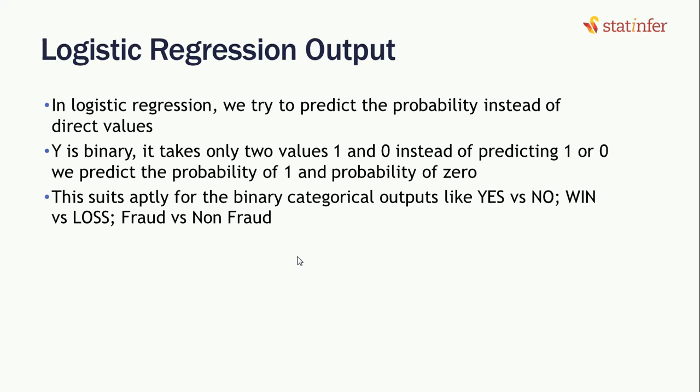Why is binary? It takes only two values, 0 and 1. So instead of predicting directly 0 and 1, if we try to predict probability of 1 or probability of 0, things might work out.